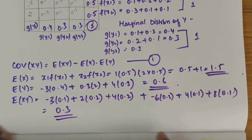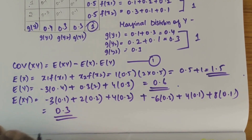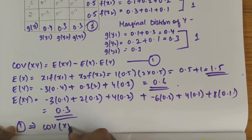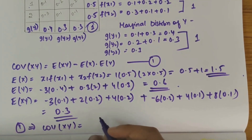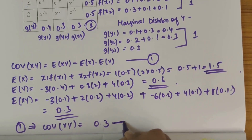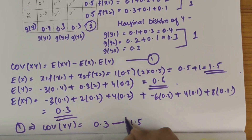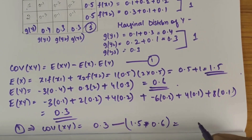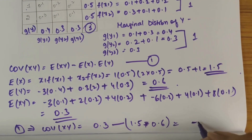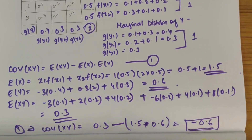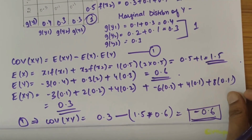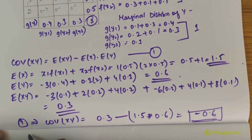Now substituting the values of E(xy), E(x), and E(y) in the first equation, we get Cov(x, y) = 0.3 minus 1.5 into 0.6. If we solve this we get minus 0.6. So this is the covariance value of x and y.